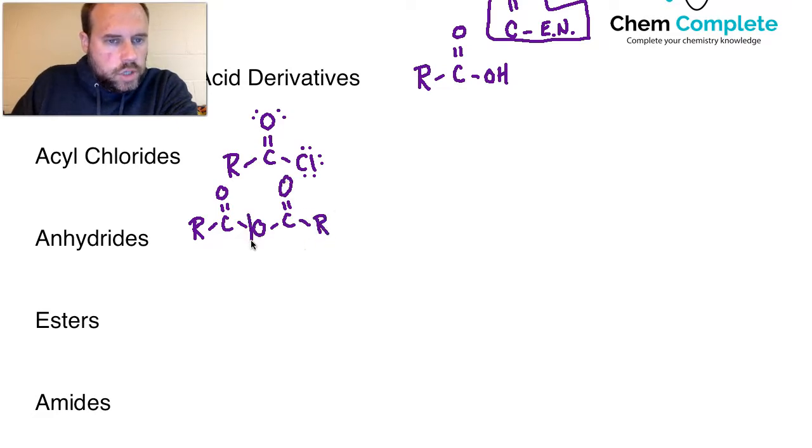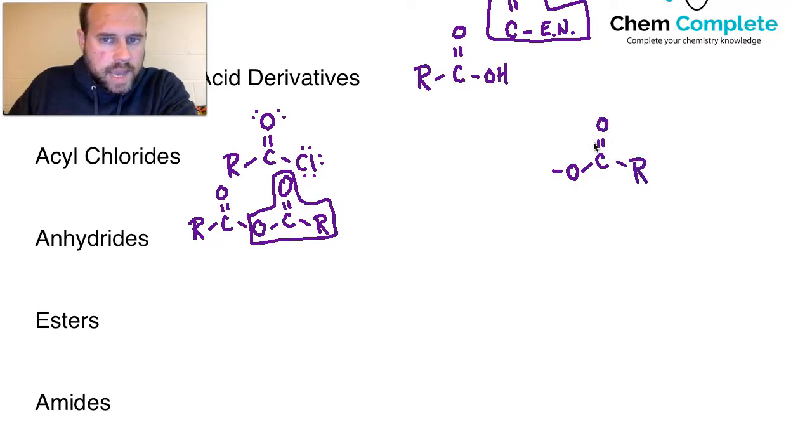So anhydrides would be the next grouping. This will have the general format R-C double bond O, and now this one is going to have another carbonyl group. It's actually going to be an O, another C double bond O, and then it will have an R group on the other side. So this whole chunk right here is going to be the derivative portion that will leave in reactions, and that's actually a pretty decent leaving group because the base is going to be resonance stabilized.